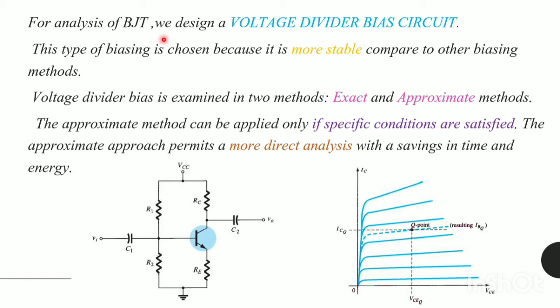Now, for the analysis of BJT, we design a voltage divider bias circuit. This type of biasing is chosen because it is more stable compared to other biasing methods. This voltage divider bias is examined in two methods - one is exact and another one is approximate. We prefer the approximate method and it can be applied only if specific conditions are satisfied.